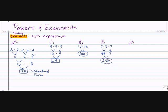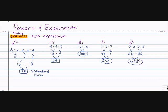5 to the fourth power means 5 times 5 times 5 times 5. 5 times 5 is 25, and 5 times 5 is 25. Still multiplying, and 25 times 25 is 625. Written in Standard Form.